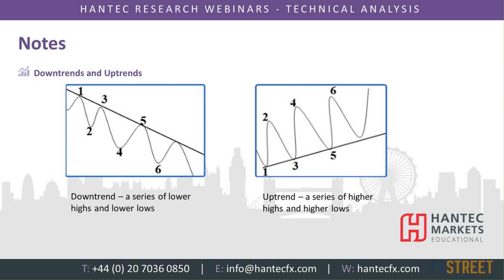Trendlines are basically a series of - in an uptrend - higher highs and higher lows, with the line linking through the bottom. In the opposite way, a downtrend is a series of lower lows and lower highs linked by a line at the top that slopes to the downside. When you begin your analysis, your three main priorities should be trend, trend, trend. Deciphering the direction of the market you're in is vital to understanding how you analyse other indicators such as momentum.